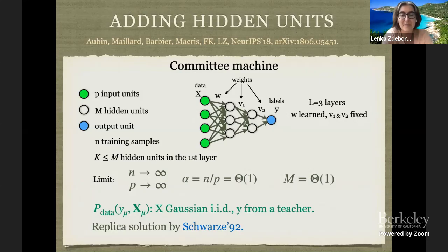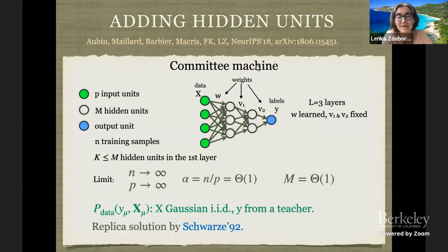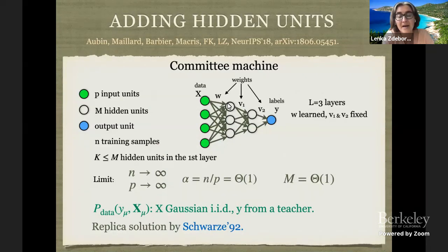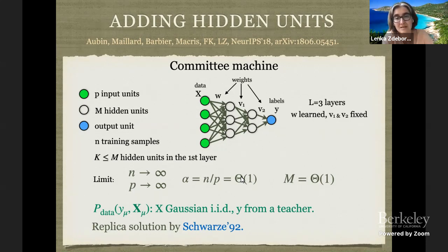Going back to the works in physics in the 90s, notably this paper by Schwarze 92, where he presented the replica solution to a model called in the physics literature the committee machine — a simple neural network with hidden variables organized in few layers. The solution is in a limit where the number of samples n goes to infinity and the dimension goes to infinity with a fixed ratio, and the number of hidden units M is of order one.